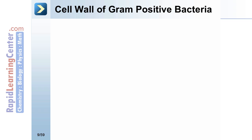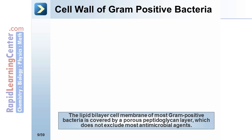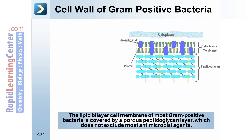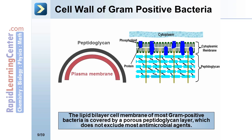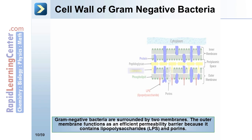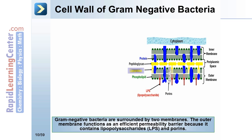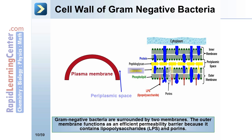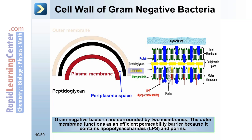The lipid bilayer cell membrane of most gram-positive bacteria is covered by a porous peptidoglycan layer, which does not exclude most antimicrobial agents. Gram-negative bacteria are surrounded by two membranes. The outer membrane functions as an efficient permeability barrier because it contains lipopolysaccharide (LPS) and porins.